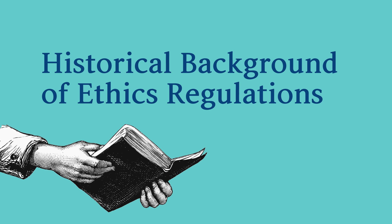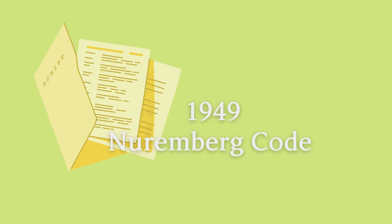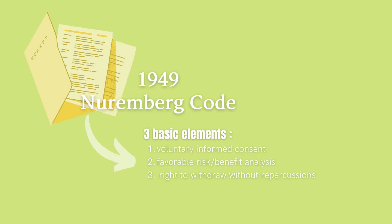Let us go back to the historical background of ethics regulations. The 1949 Nuremberg Code is the first international codification of the minimal expectations for the conduct of research involving human subjects. There were three basic elements: voluntary informed consent, favorable risk-benefit analysis, and the right to withdraw without repercussions.